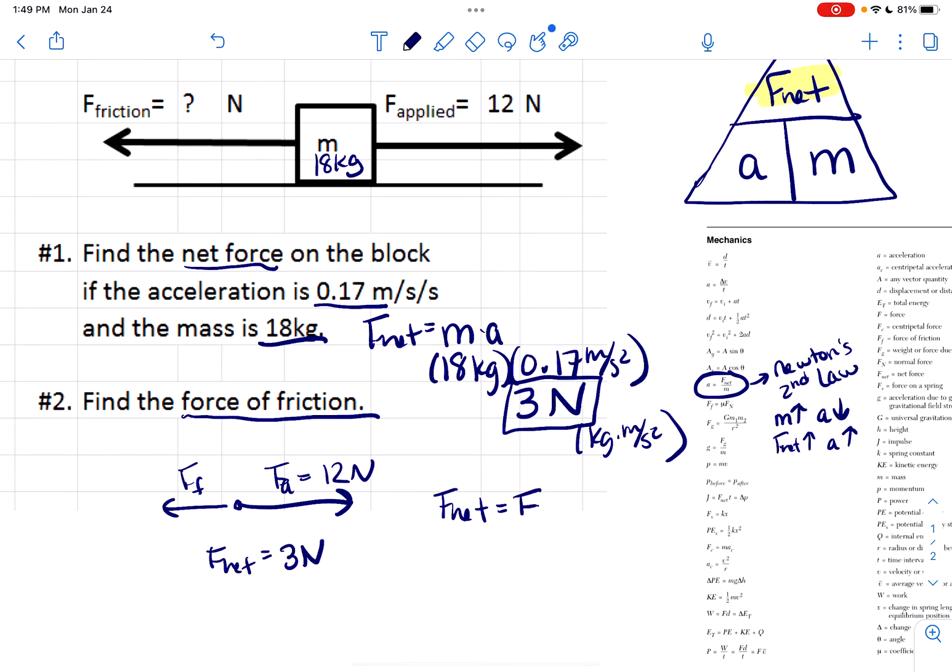We could write this as an equation: F net is going to equal force applied minus force of friction. We know F net is three Newtons, we know force applied is 12 Newtons. So what does force of friction have to be to make this true? Force of friction has to be nine Newtons because they're going to cancel out. These are vector quantities.